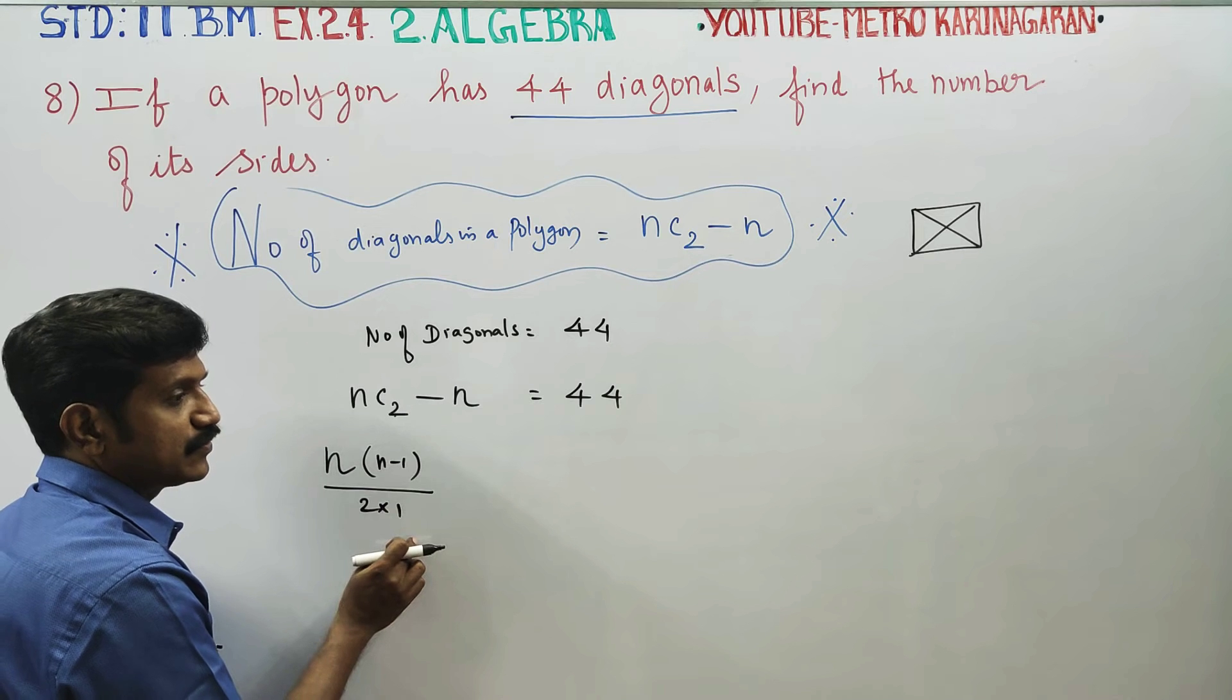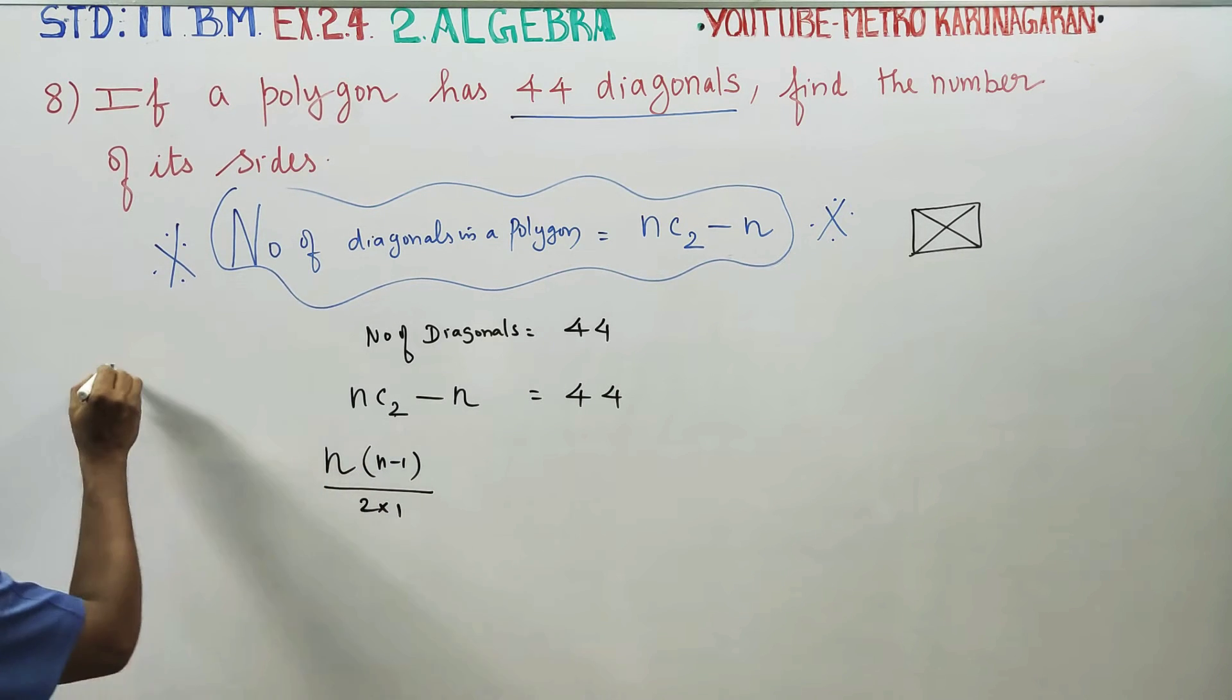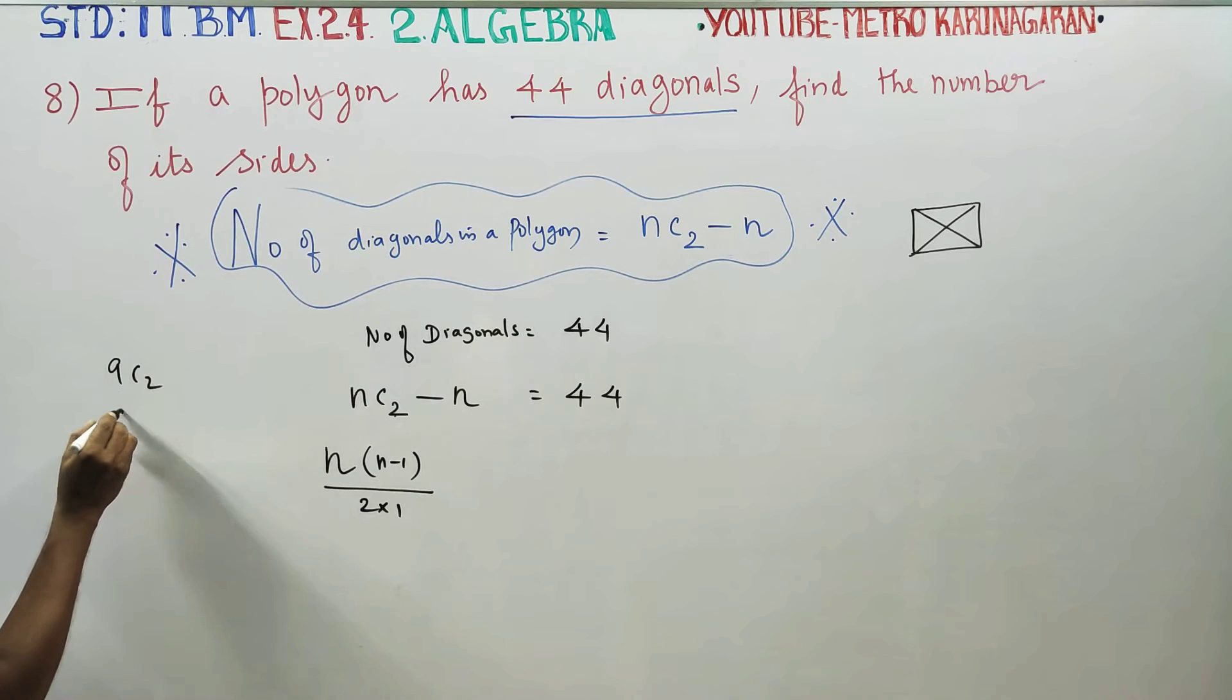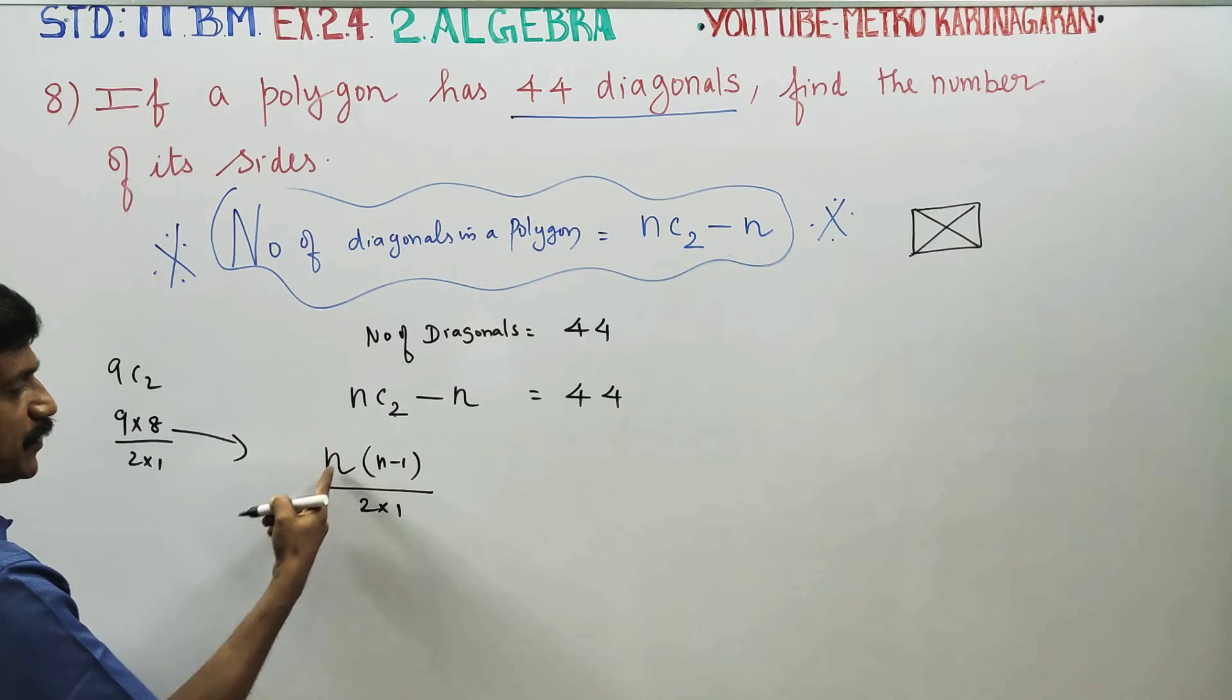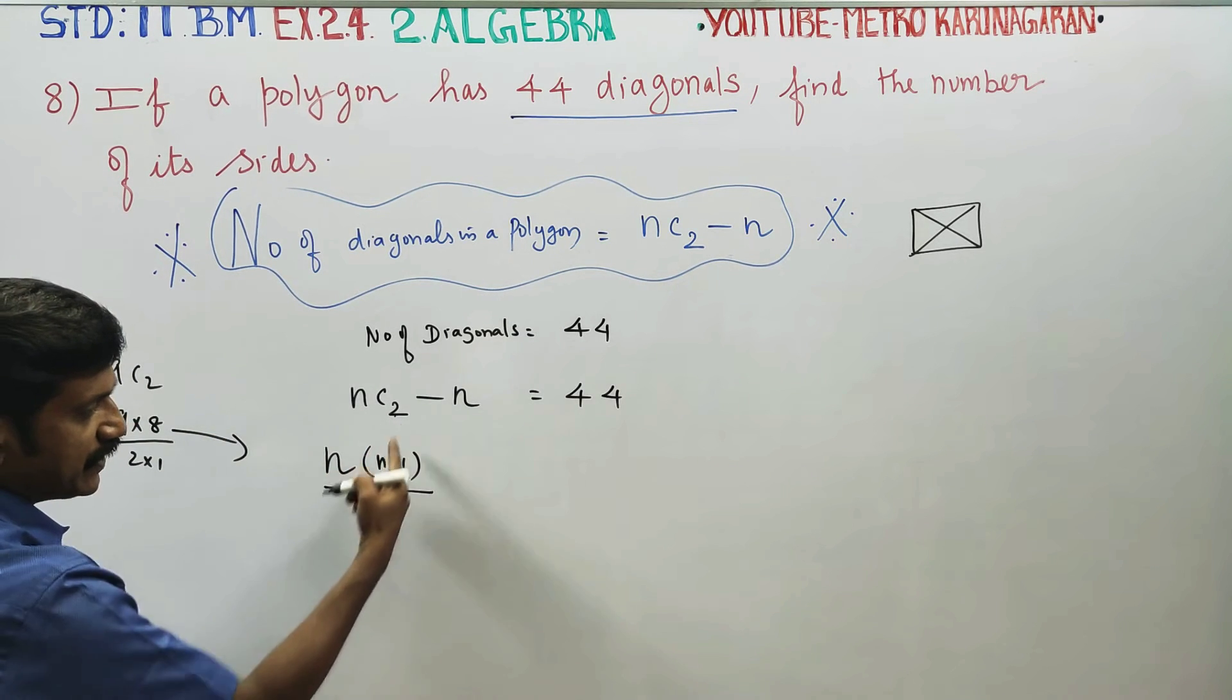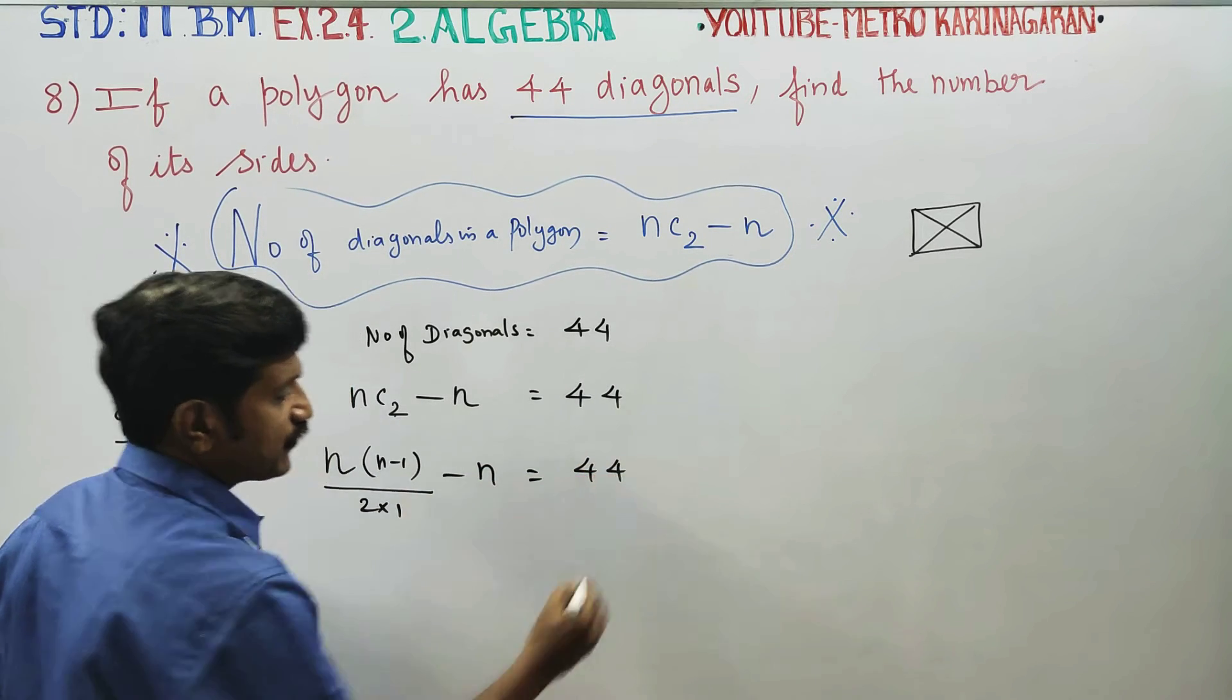2C2 is 2 into 1. 3C2 is also 2 into 1. 4C2 is 4 into 2 into 1. That is the idea. 2 factorial is 2 into 1. Minus n is equal to 44.